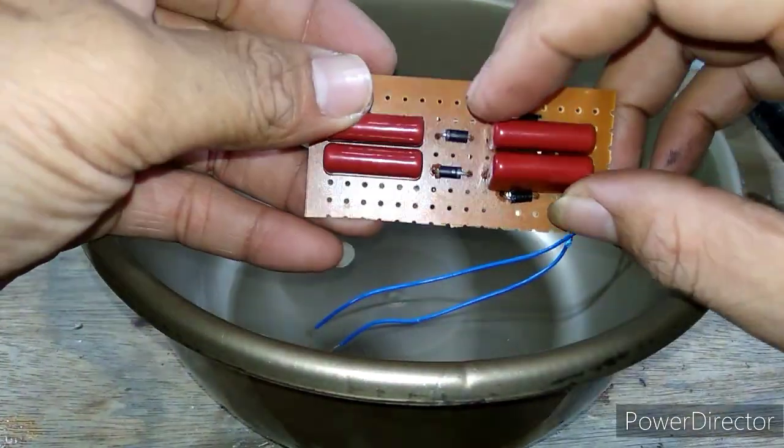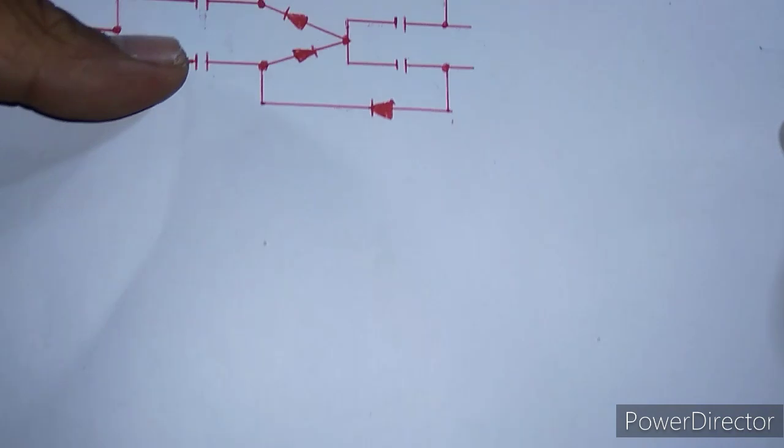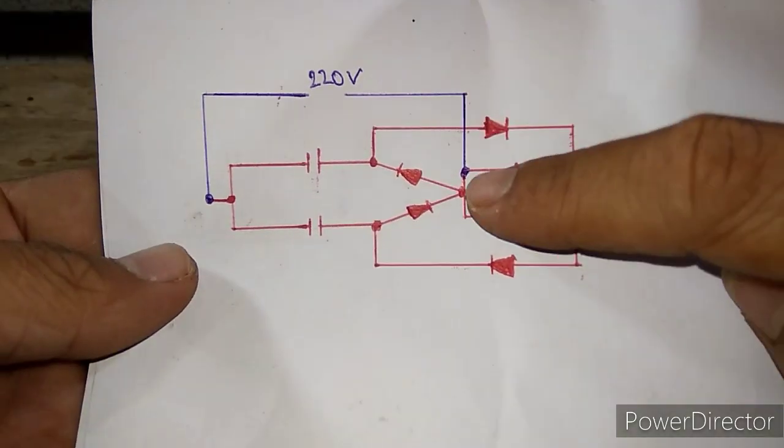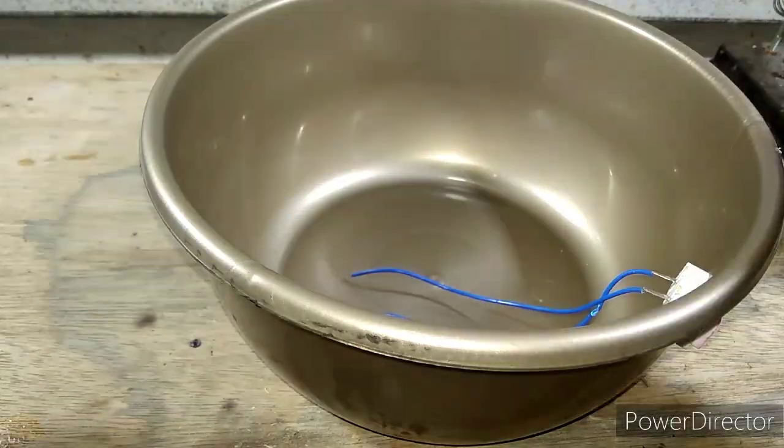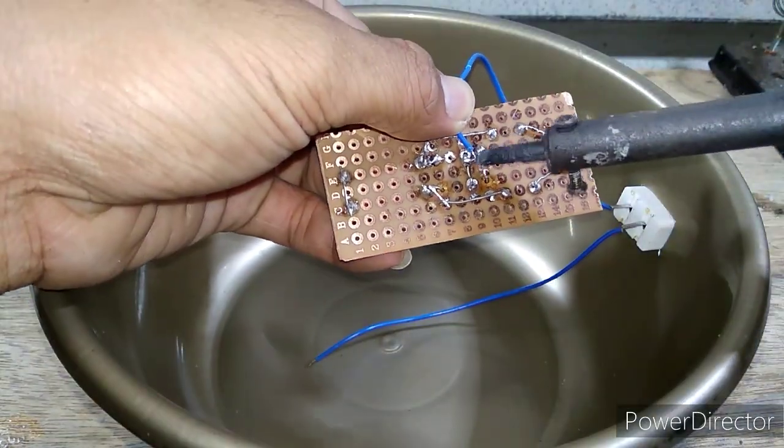Untuk arus AC dari PLN, saya solder di sebelah sini. Ini bolak-balik tidak masalah karena arus AC.